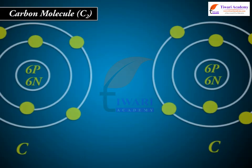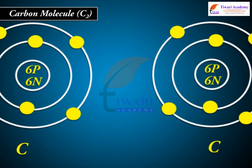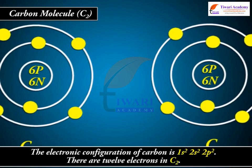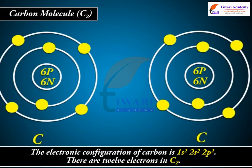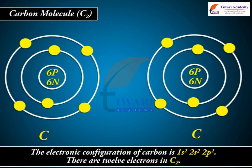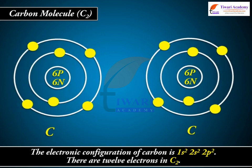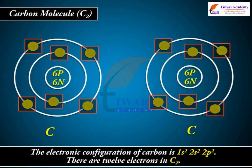3. Carbon molecule C2. The electronic configuration of carbon is 1s2, 2s2, 2p2. There are 12 electrons in C2.